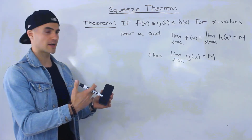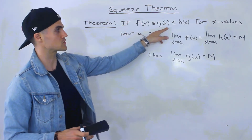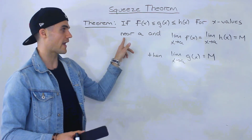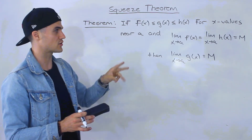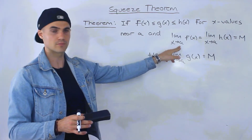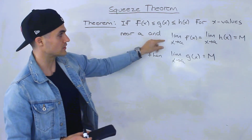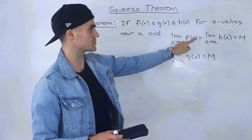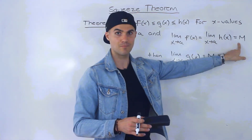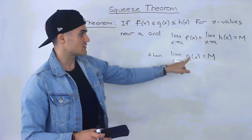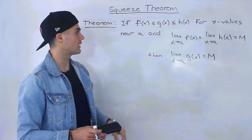So to make this into a nice formal statement: this is the theorem. If f of x is less than or equal to g of x, which is less than or equal to h of x for x values near a, and also the limit as x approaches a of f of x equals the limit as x approaches a of h of x, and both of those limits are equal to m, then that means the limit as x approaches a of g of x — the middle function — is also equal to m. So that is the theorem written in a nicer way.